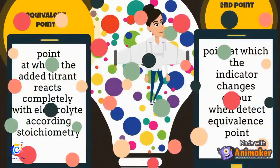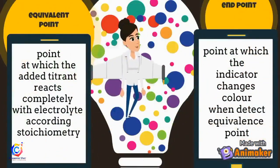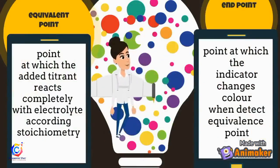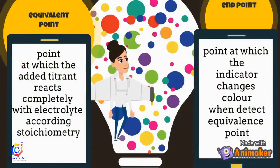Equivalence point is the point at which the added titrant reacts completely with the analyte. End point is the point at which the indicator changes colour.